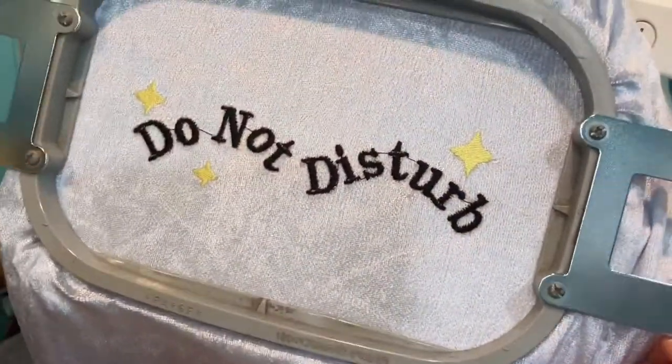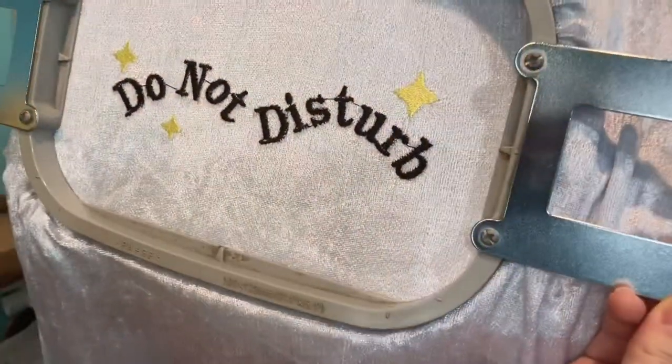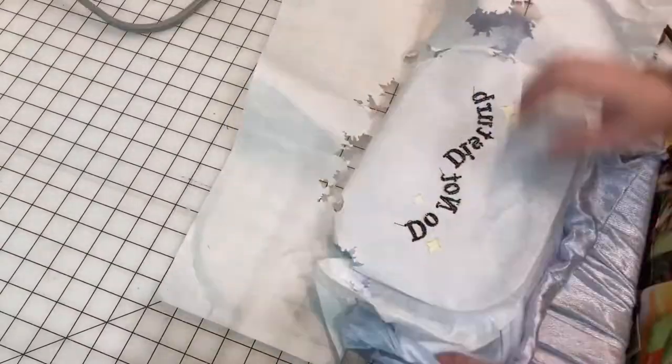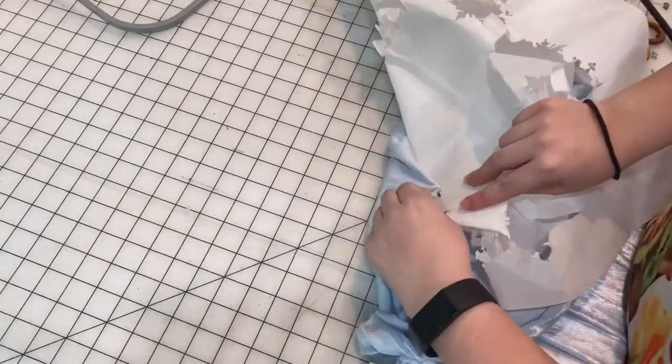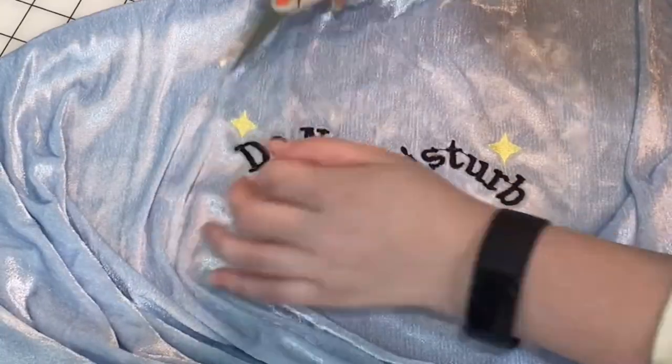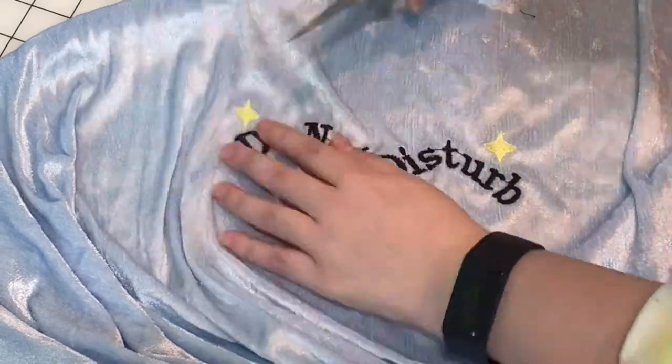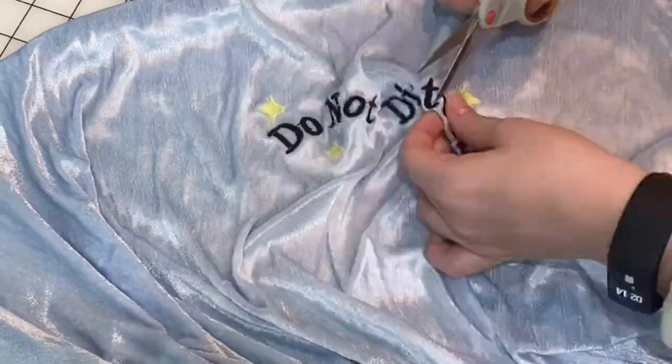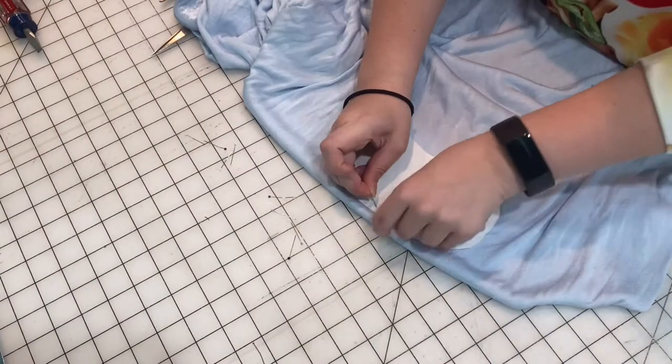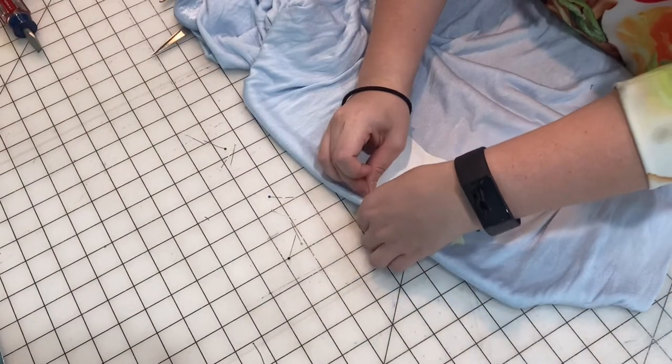Yay! That looks pretty cool. I'm glad it worked on the first try. So now that our words are embroidered onto the fabric, I'm just going to tear off the back of that stabilizer very carefully. And I'm also going to clip any of the strands of thread that are between the letters.